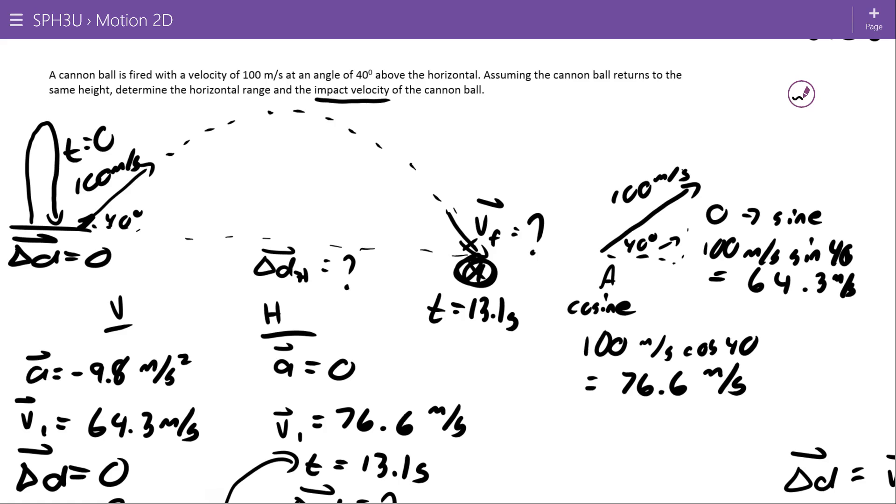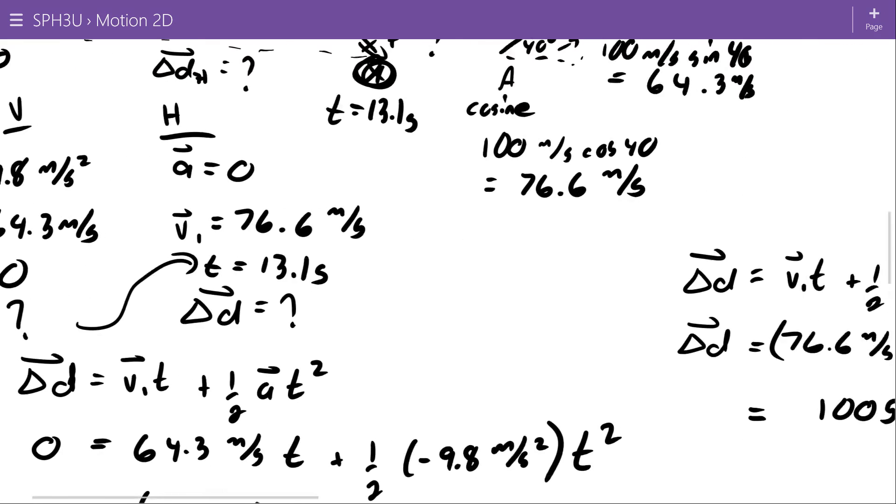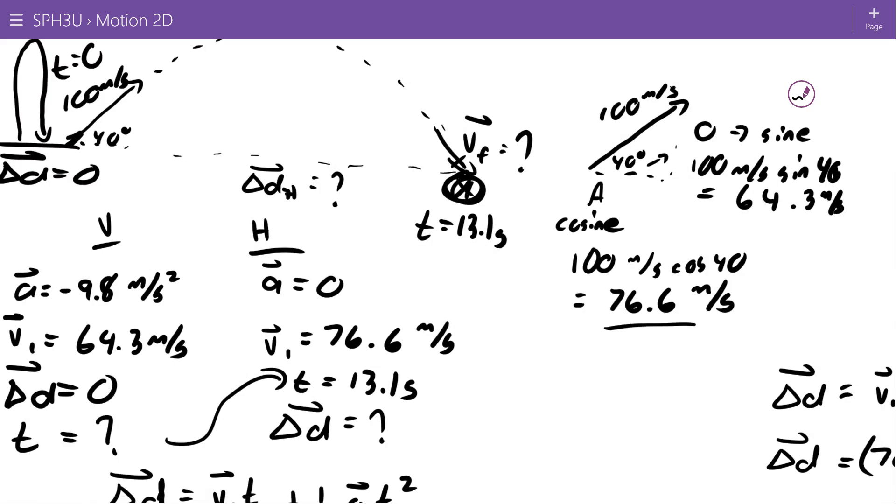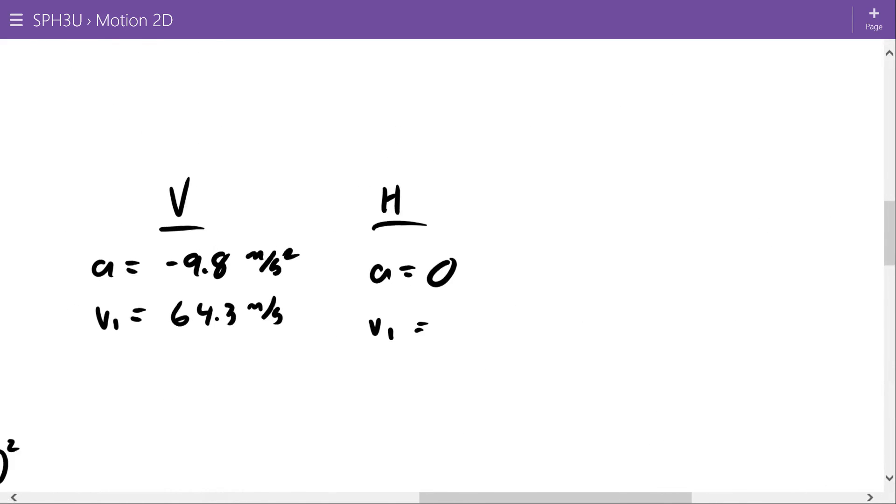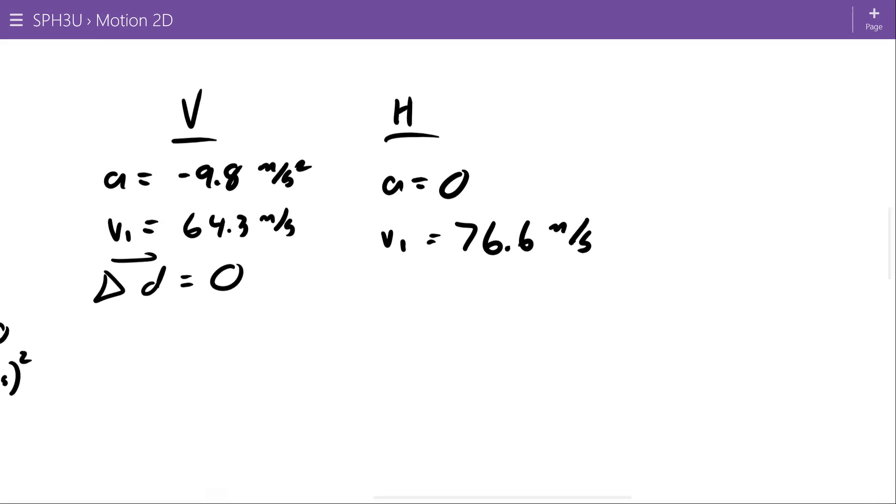That being said, let's just show that mathematically to be really complete. I'm going to move way over here and sort of start a whole new thing, just to get us a clean page to work with. So we've got vertical and horizontal. Our acceleration in the vertical direction is negative 9.8 meters per second squared. And the horizontal direction is zero. Again, gravity pulls it down. Horizontally, it just moves along. My initial was 64.3 in the vertical direction, and 76.6 in the horizontal direction. And again, one more thing in the vertical direction, my delta D or my displacement is zero.